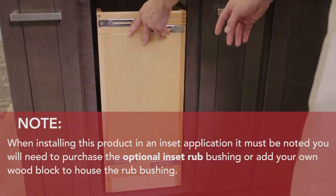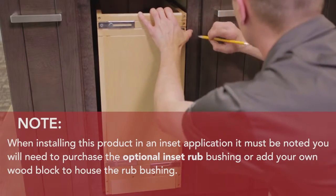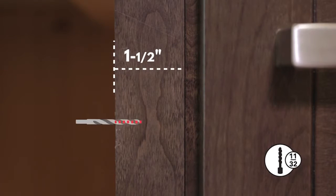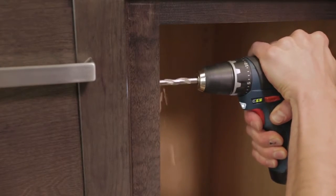Next we'll want to install the adjustable rub bushings in our face frame. For a one and a half inch face frame, use your 11/32 inch drill bit to drill a pilot hole three-fourths of an inch deep in the center of the face frame and at a height that will put the rub bushing in the center of your railing.